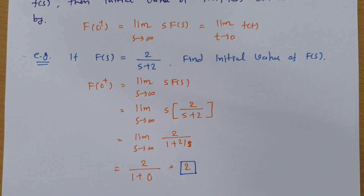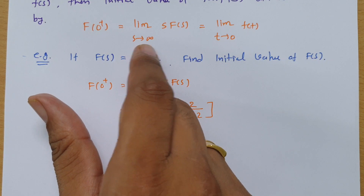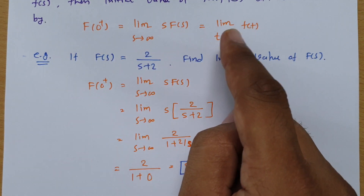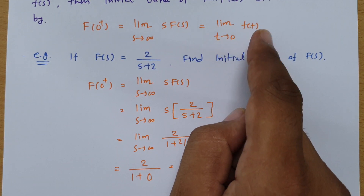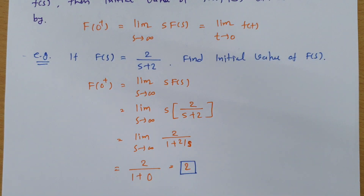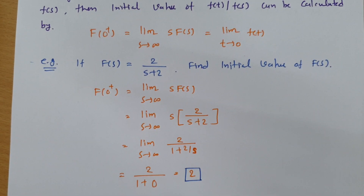The initial value theorem is used to calculate the value at time t equals 0. In the Laplace domain, apply limit s tends to infinity of s·f(s); in the time domain, apply limit t tends to 0 of f(t). I hope you understood this session. In the next session I will be explaining the final value theorem, so stay tuned.